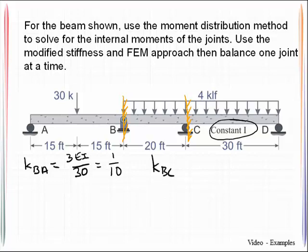The stiffness factor at joint B of member BC is 4EI over L and that is because that's a fixed fixed member. So give me one-fifth.